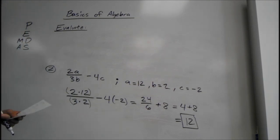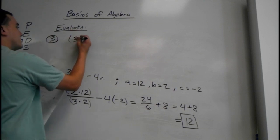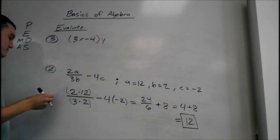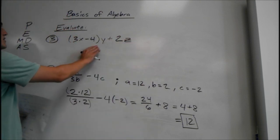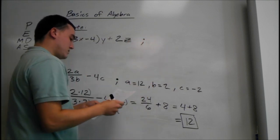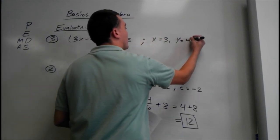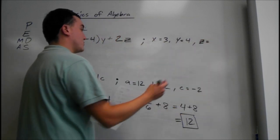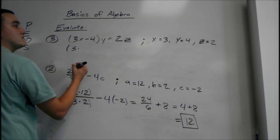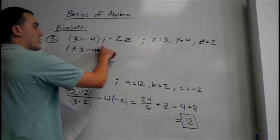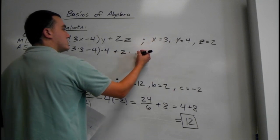One more of these, then we'll move on to inequalities. Number 3: 3x minus 4 times the quantity y plus 2z, where x is 3, y is 4, and z equals 2. The y is on the outside of the parentheses, so we're going to do that after we do the parentheses. We plug in: 3 times 3, minus 4 times the quantity 4 plus 2 times 2.